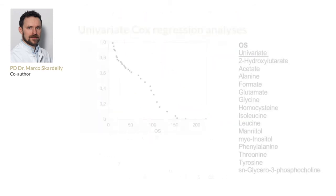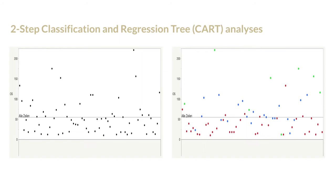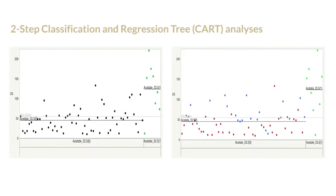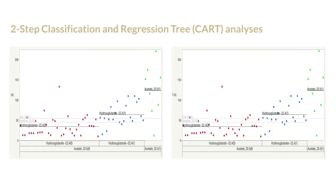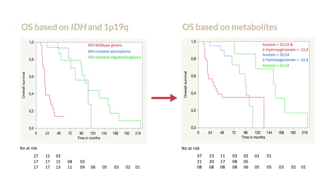Using univariate COX regressions, we identified metabolites that could serve as potential differentiators in these different groups. We then performed a two-step CART analysis taking into account specific metabolites, their cut-offs, and clinical outcome. As you can see, the distributions of all patients are shown with black dots, and metabolite-based distributions are highlighted in color-coded dots. The Kaplan-Meier curve shows that the metabolite profile actually better differentiates clinical outcome in the IDH-mutated group.